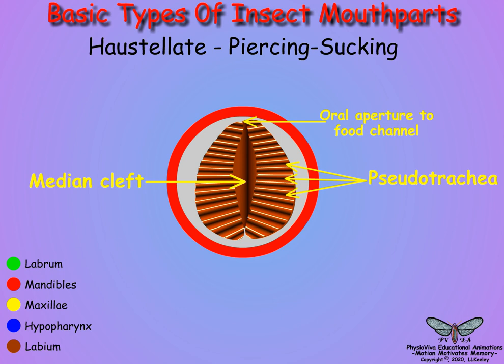When feeding, liquid food flows along the pseudotrachea to the medial cleft, through the oral aperture, into the food channel.